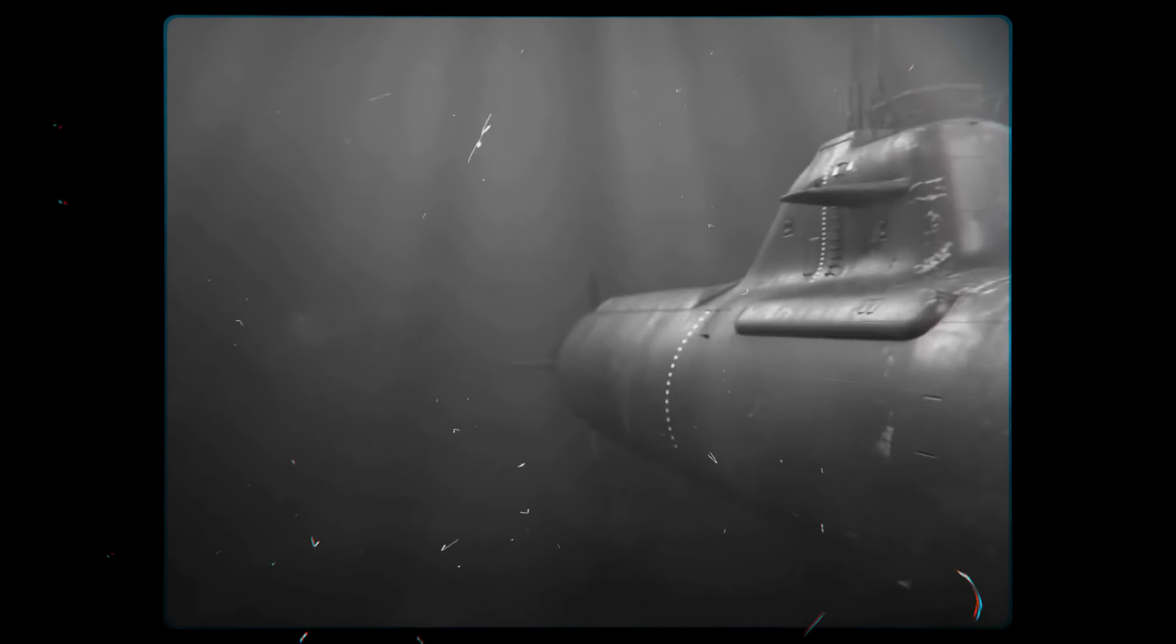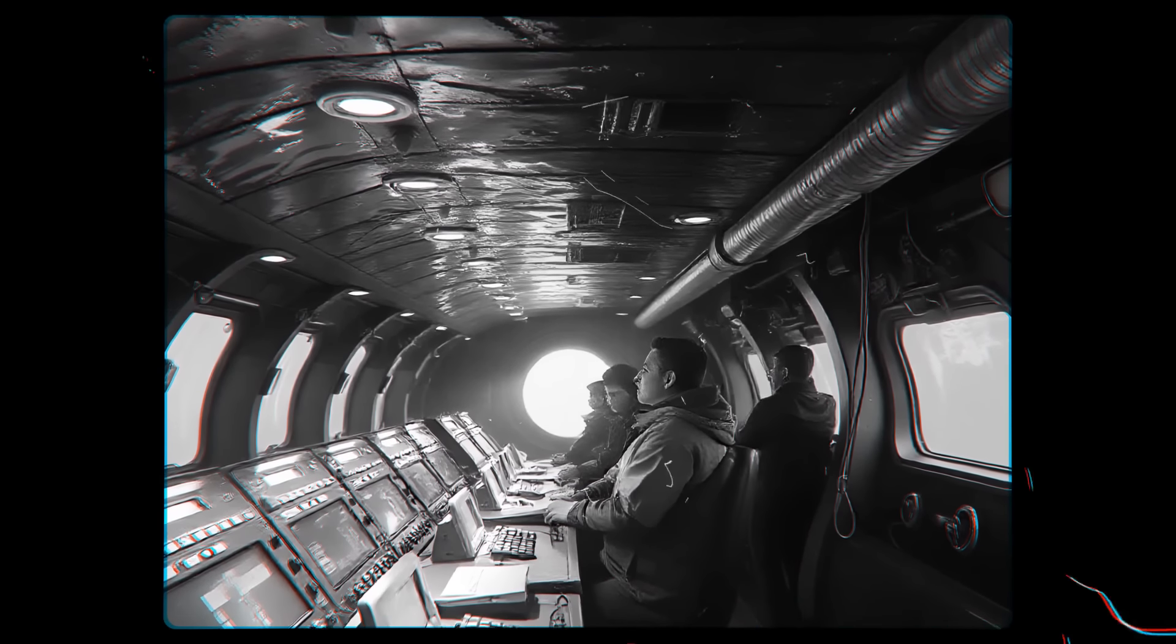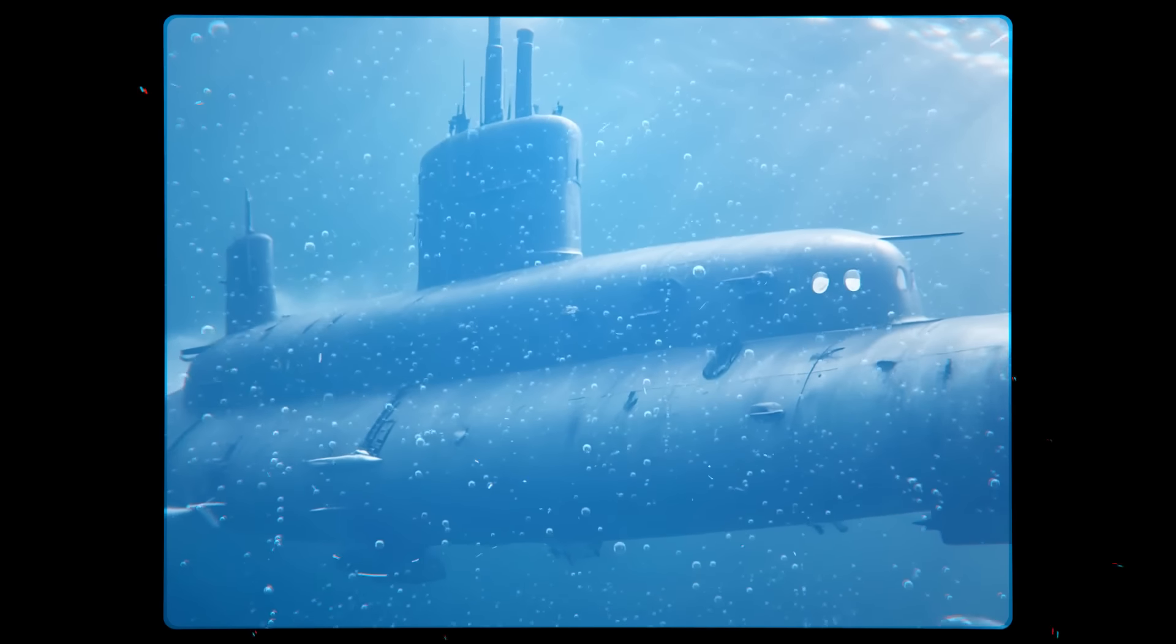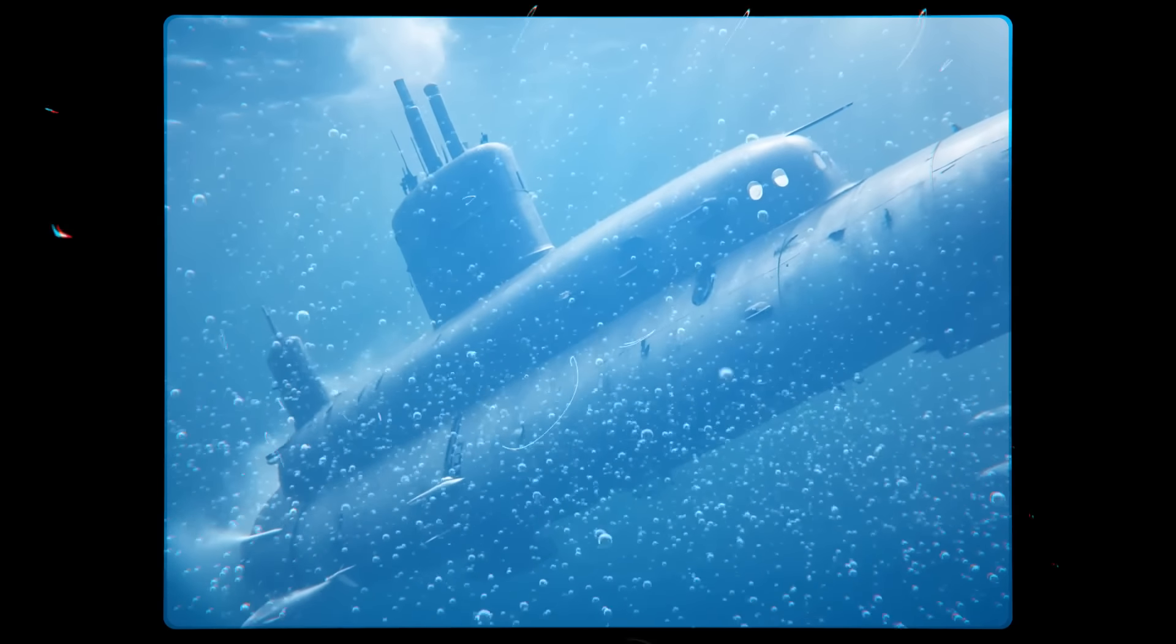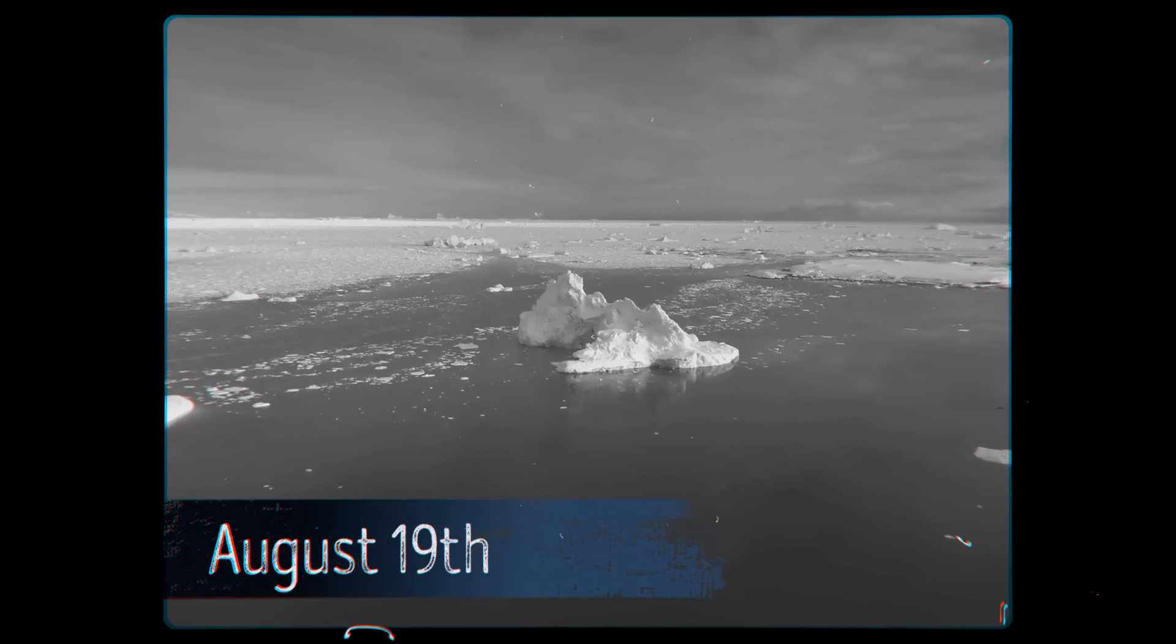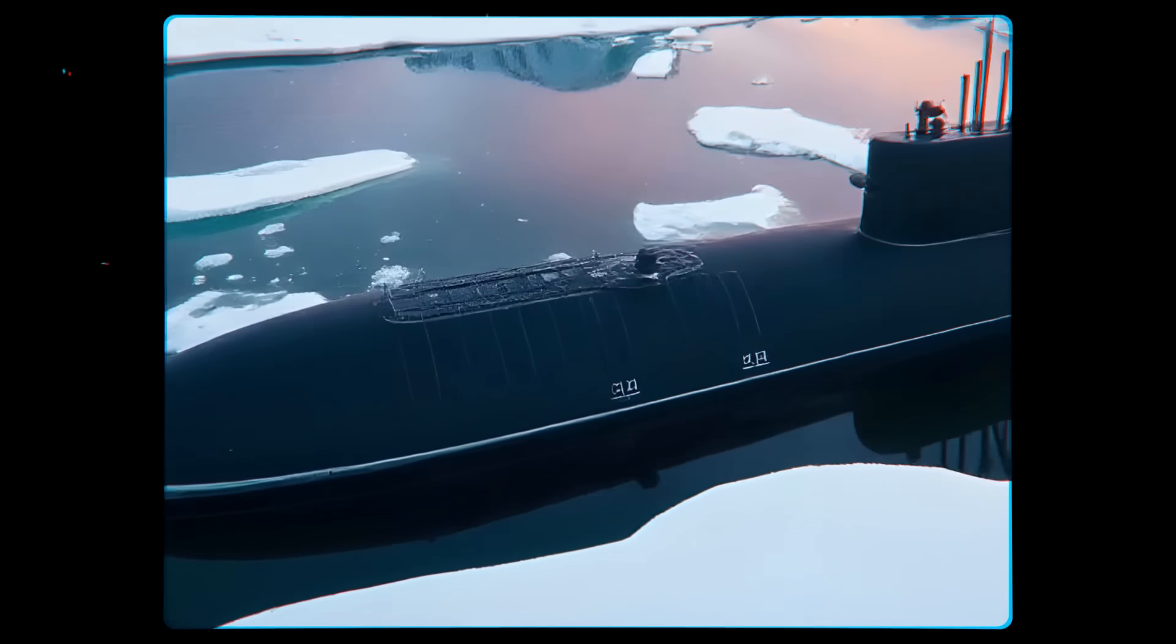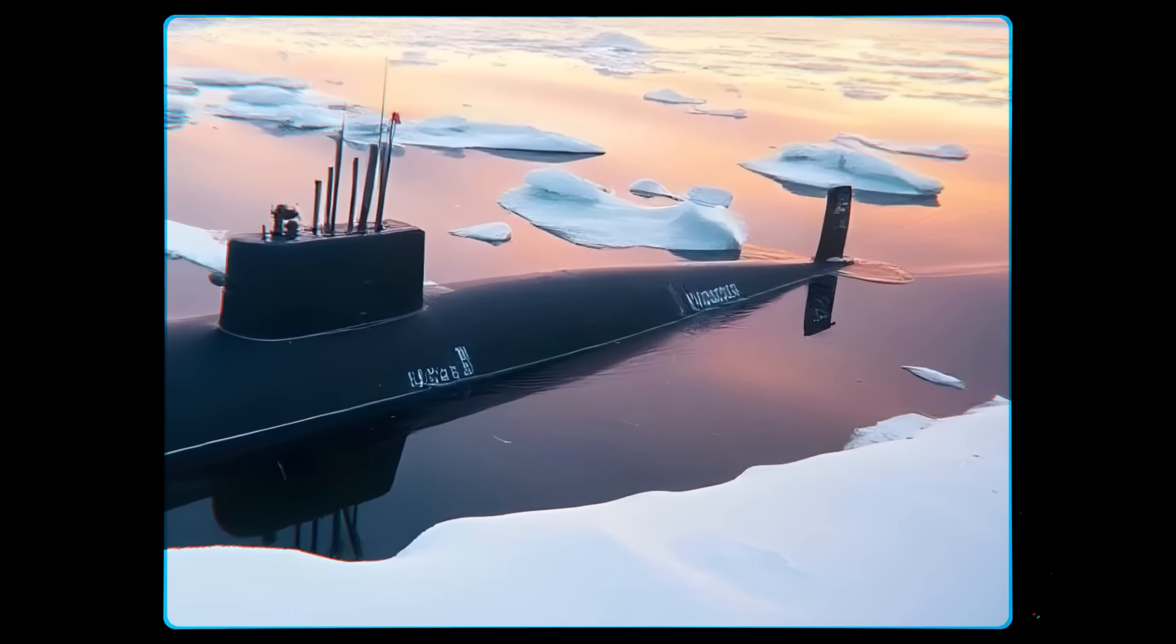On August 5, the Nautilus finally left Bergen and headed north to find ice flows. They had lots of delays because of mechanical problems and storms. One storm even made the submarine tilt at crazy angles. Finally, on August 19, they saw the first ice flow. For a few days, they followed the ice's edge, looking for a good spot to dive.